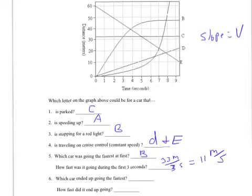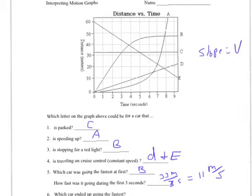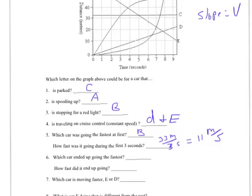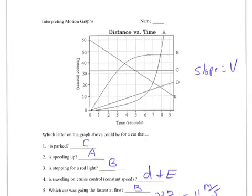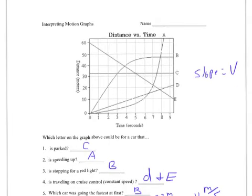Which car ended up going the fastest? If we look here, the one that ended up having the steepest slope is A. So A ended up going the fastest. How fast did it end up going? Well, this is a little bit tricky, but you can do this. Remember, the slope equals the change in Y over the change in X.